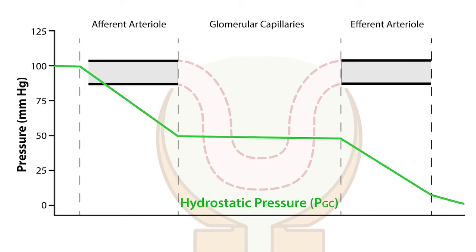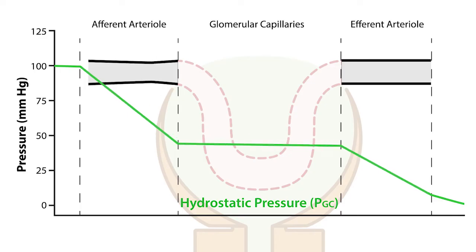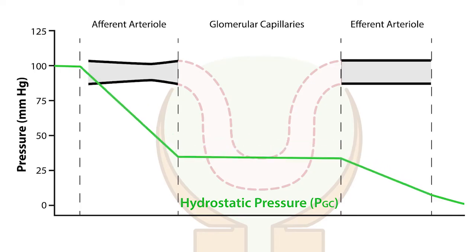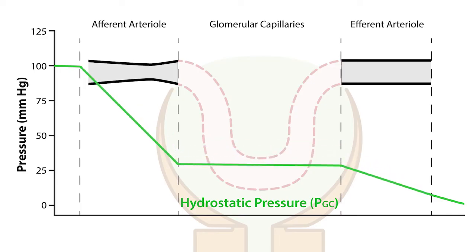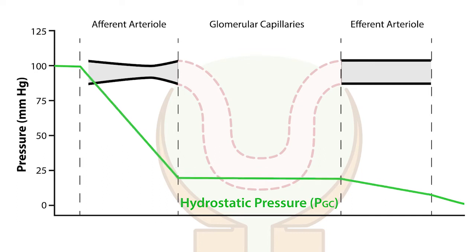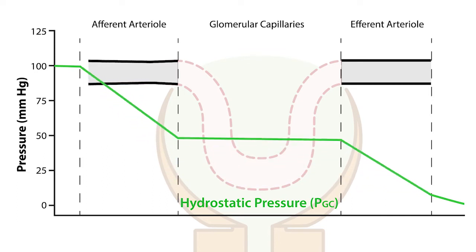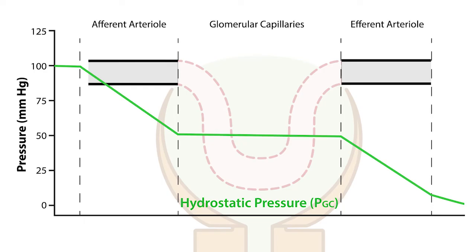From this, we see that increases in afferent arterial resistance result in decreased glomerular capillary hydrostatic pressure. This occurs because the afferent arterial is upstream of the glomerular capillaries. Conversely, increases in efferent arterial resistance lead to increased glomerular capillary hydrostatic pressure.